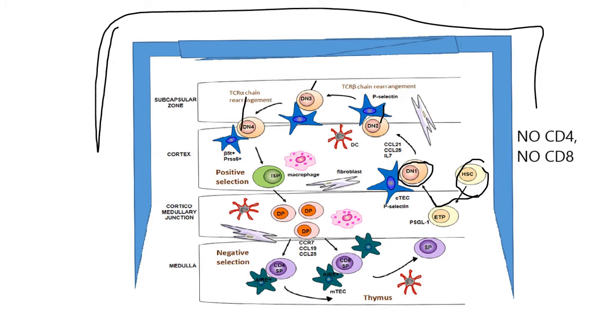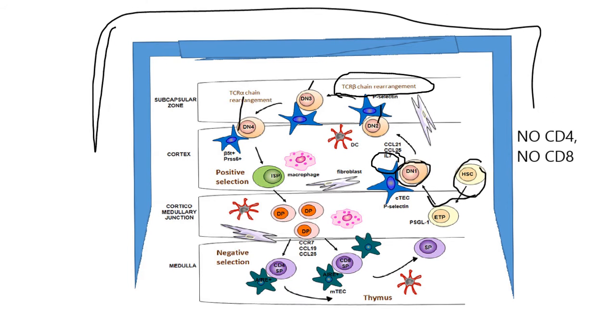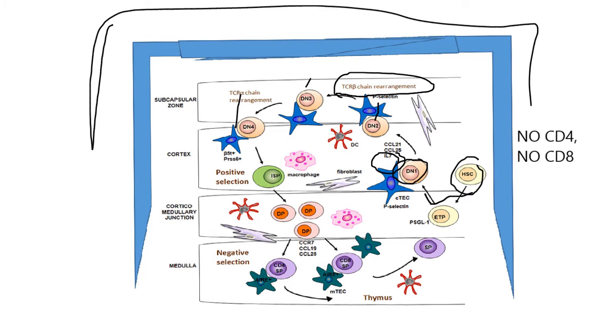The first thing it does, remember I said IL-7 causes proliferation, so you get proliferation. And then you get the genetic recombinations to the T cell receptor. And this recombination is going to happen first to the beta chain. And a cell that can successfully produce a beta chain won't die. Cells that can't successfully produce a beta chain, they will die.